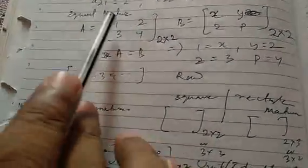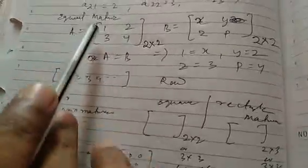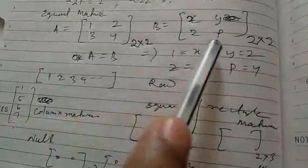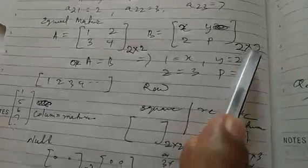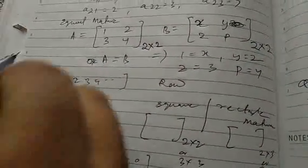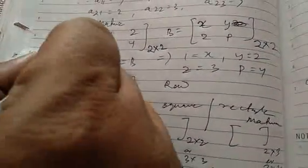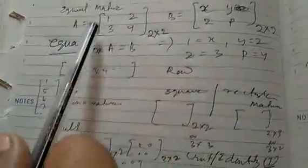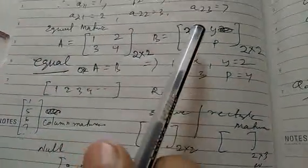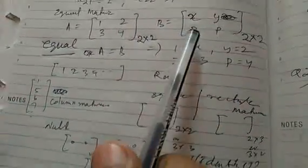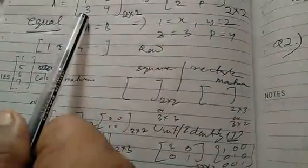Now, if two matrices have the same order — say 2 into 2 here and also ordered 2 into 2 — they are said to be an equal matrix. For that, their corresponding elements are equal. Therefore, x is equal to 1, y is equal to 2, z is equal to 3, and p is equal to 4.